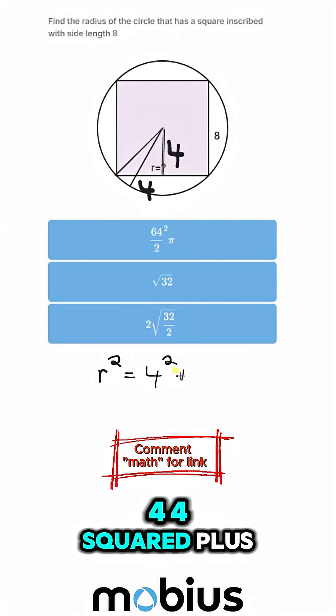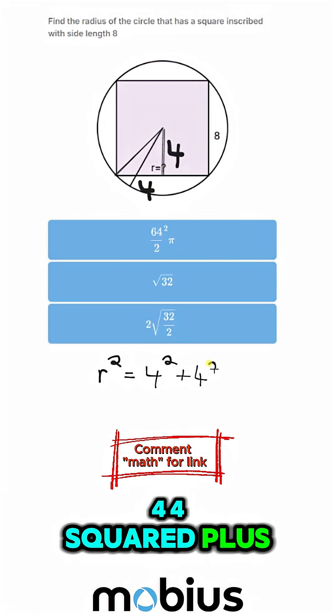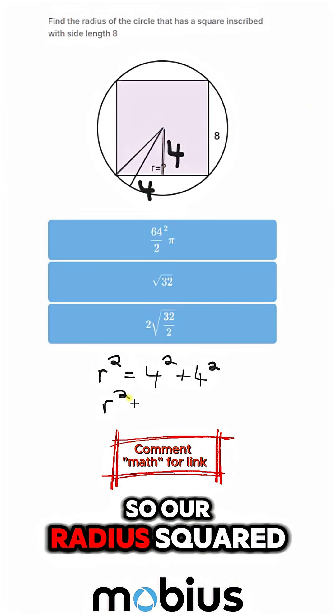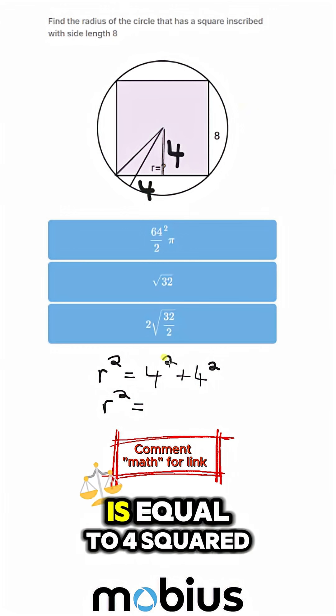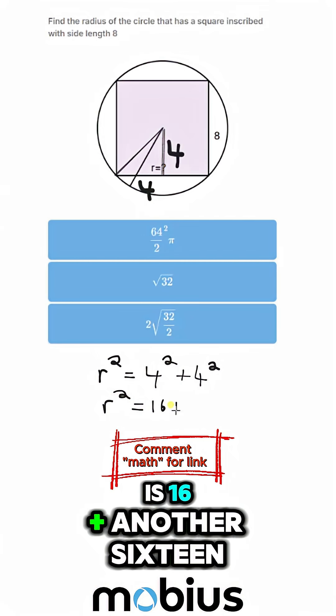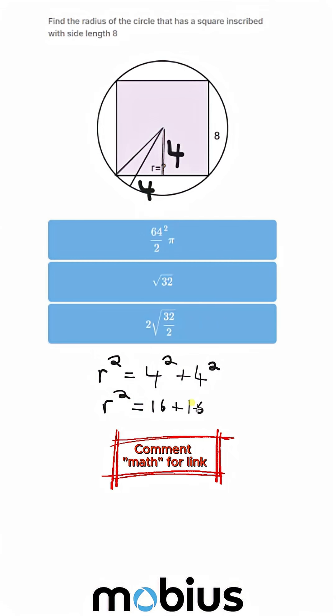So I'm going to go with 4. 4 squared plus 4 squared - so our radius squared is equal to 4 squared, which is 16, plus another 16, which is 32.